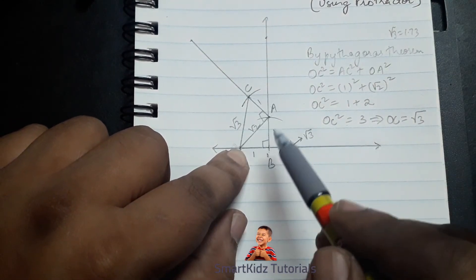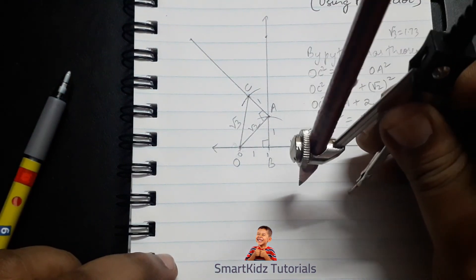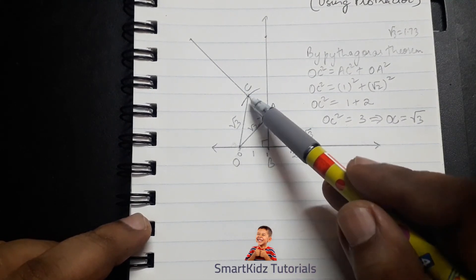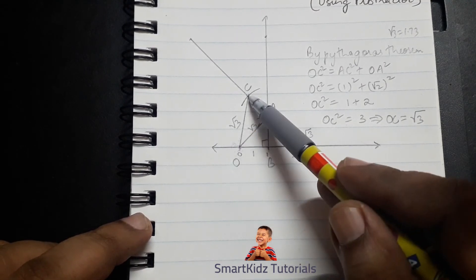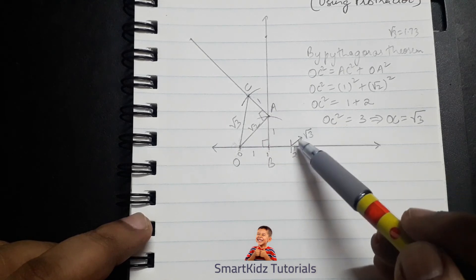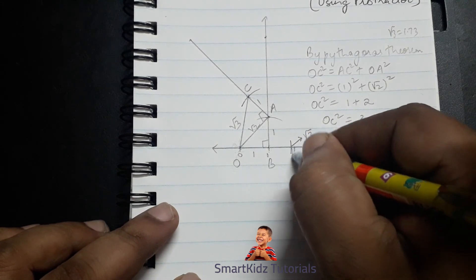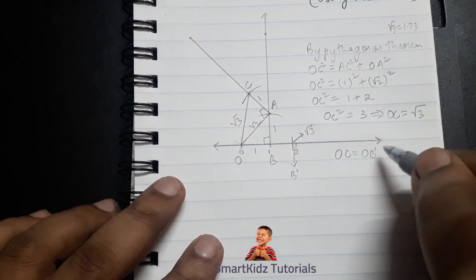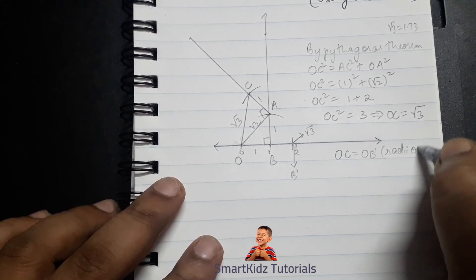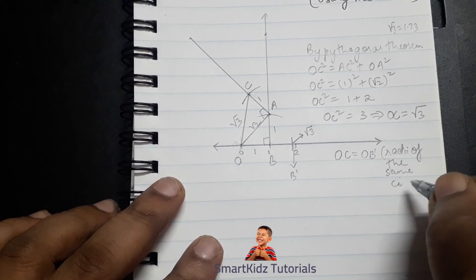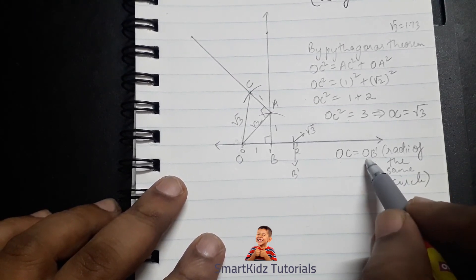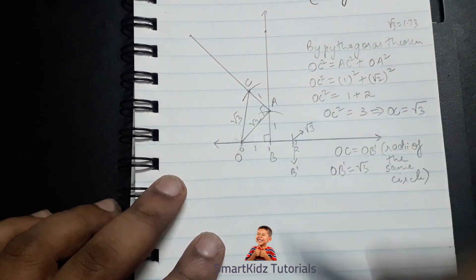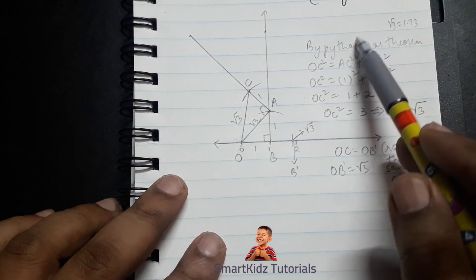Why is this root 3? When we use a compass we are drawing a circle. If OC is the radius, then all radii of the circle are the same. This arc cuts a new point on the number line — let's call it B dash. So OC must equal OB dash, because they are radii of the same circle. And since OC equals root 3 (which we proved using Pythagoras' theorem), OB dash must also equal root 3.